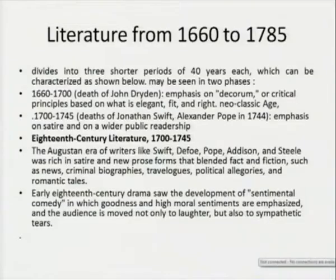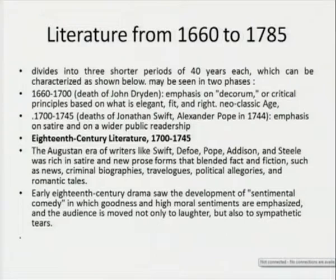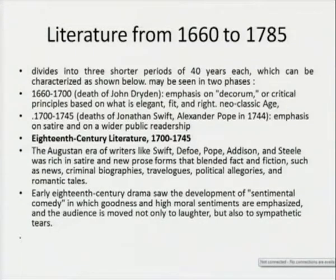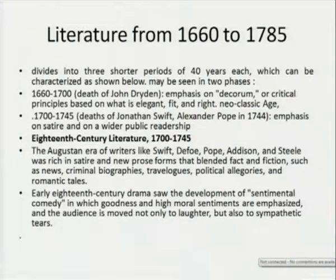When we look into the literature from 1660 to 1785, we find it can be divided into three shorter periods of 40 years each. The first period is 1660 to 1700 — that of John Dryden — the neoclassical period, where emphasis was on decorum and critical principles based on what is elegant, fit, and right. Then comes 1700 to 1745, the deaths of Jonathan Swift and Alexander Pope in 1744, another stage with emphasis on satire and on wider public leadership. The Augustan era of writers like Swift, Defoe, Pope, and Addison was rich in satire and new prose forms that blended fact and fiction, such as news, criminal biographies, and travelogues.